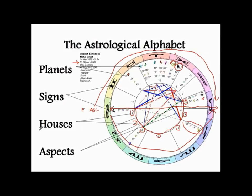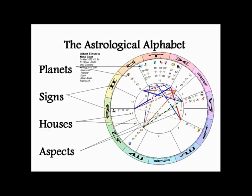To sum up, the houses are basically a division of the space around the earth into twelve, not always equal sections, unlike the zodiac. In the context of Vedic astrology, I use the houses a lot more.